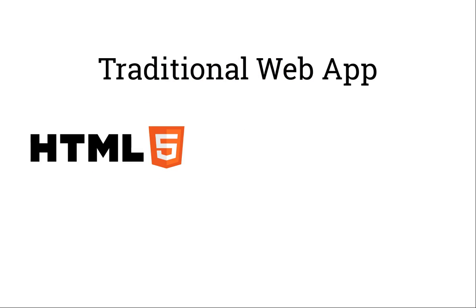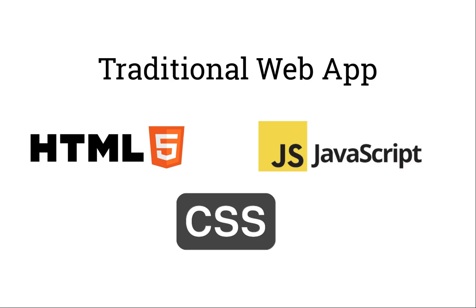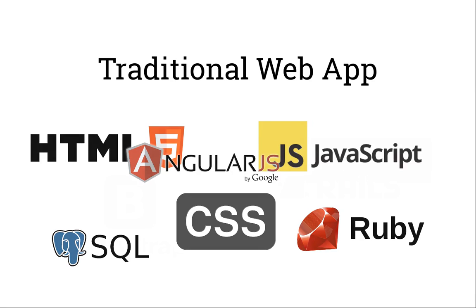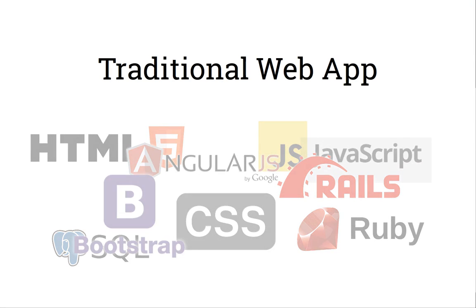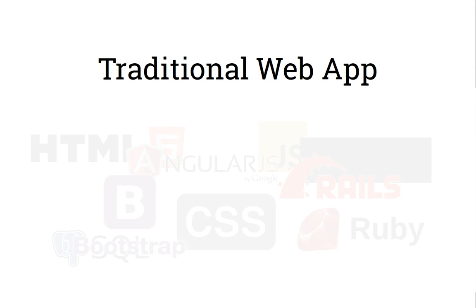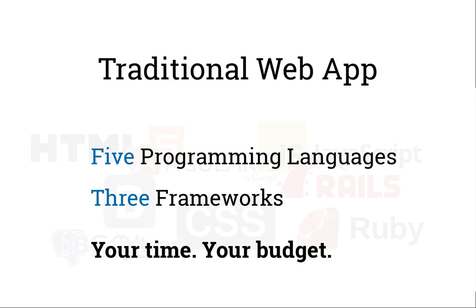Traditionally this means HTML, JavaScript, CSS, a server-side language, a database, a front-end framework, a back-end framework, a CSS framework. A typical web app takes five programming languages and three frameworks to build. This is frankly insane and it all comes out of your time and your budget.